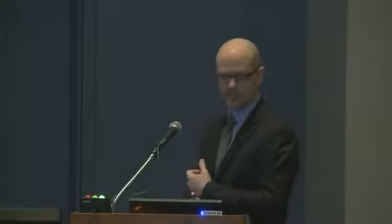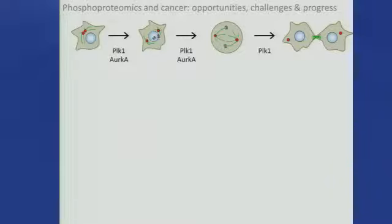My lab started from a strongly analytical background, but we've become more and more interested in dynamic biology and how mass spectrometry in particular can be used to monitor problems in dynamic biology. The system we're most focused on biologically is the cell cycle. Specifically, we're interested in by far the most interesting part of the cell cycle: mitosis.